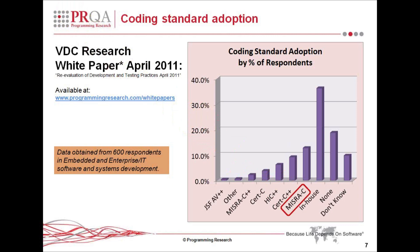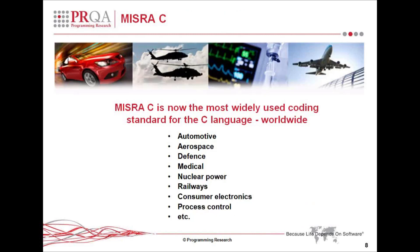It demonstrates the take-up of coding standards. And in the graph there, you will see reference to a number of well-known standards in the C and C++ world. The biggest bar on that graph is in-house coding standards, and many of those coding standards will have been derived from MISRA C. What is very evident from analysis of that data is that MISRA C has become the most prominent, the most widely used resource for coding standards right across the C and C++ world.